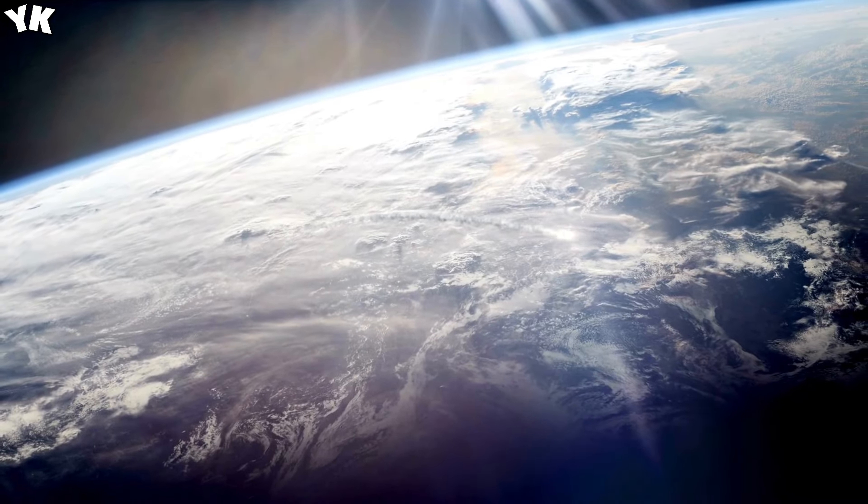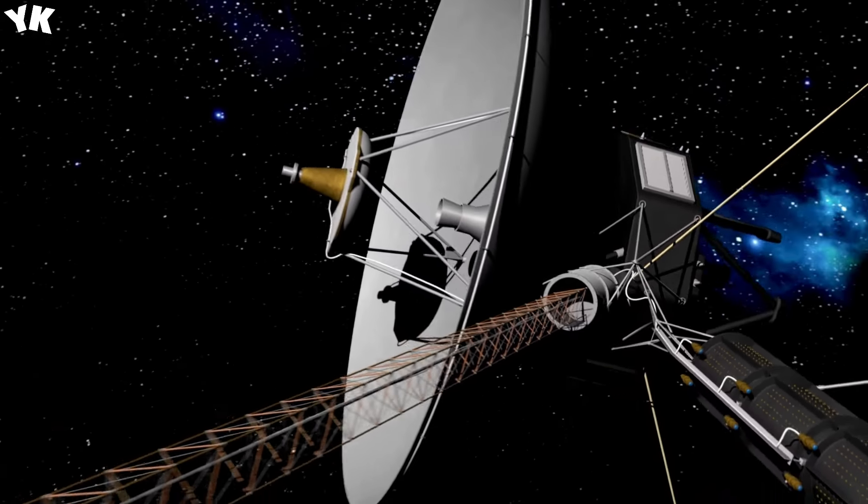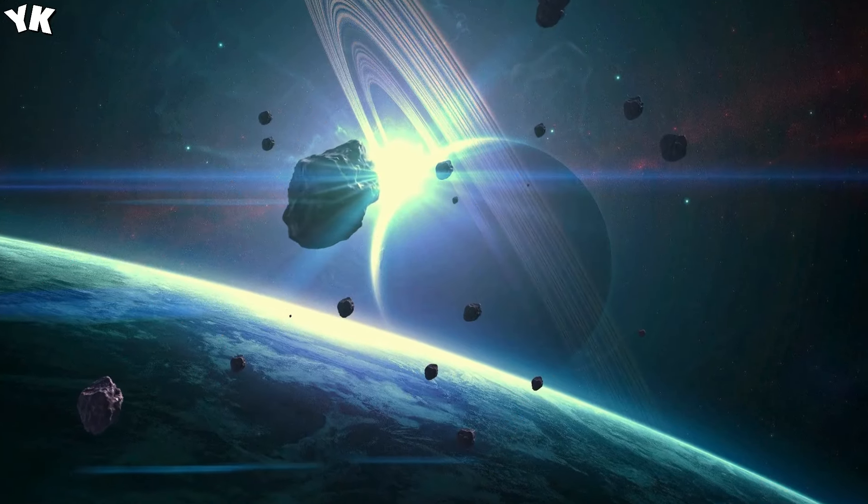Despite Voyager 1 being the furthest man-made object from Earth, we are still able to communicate with the space probe on a regular basis. But how far can it go before we can no longer communicate with it?